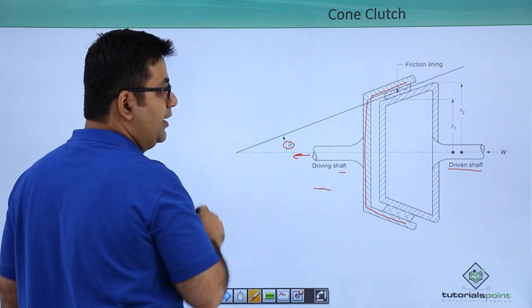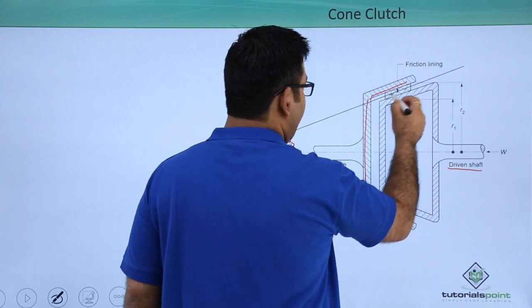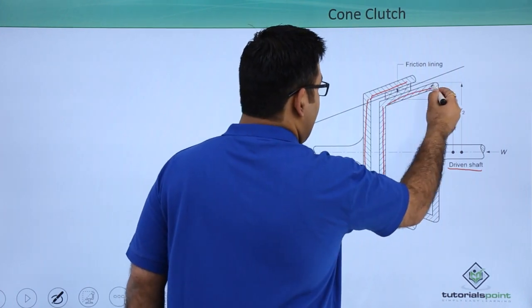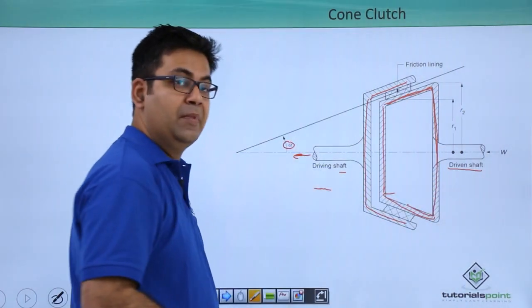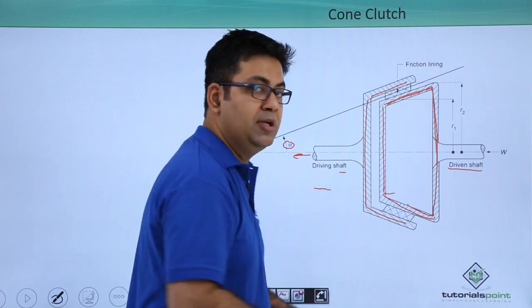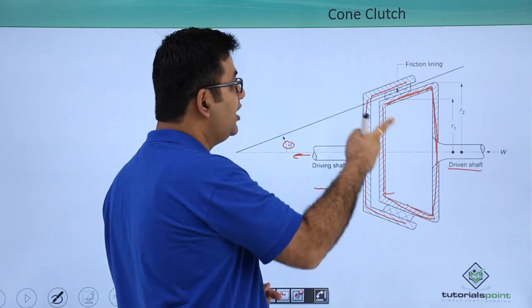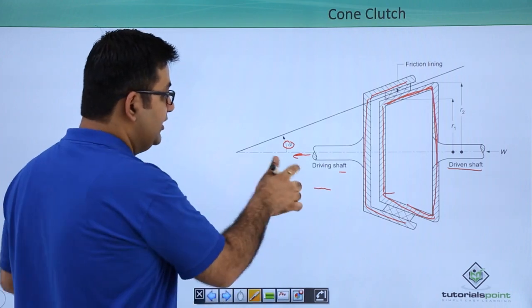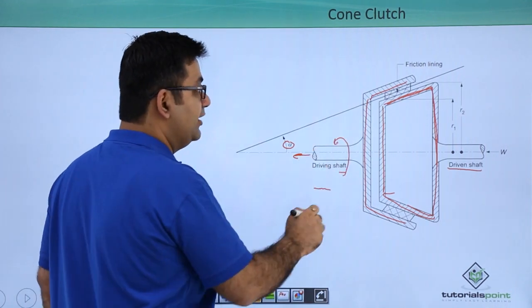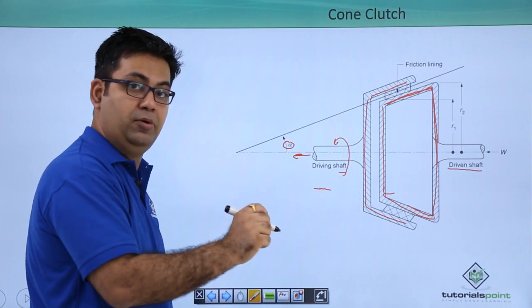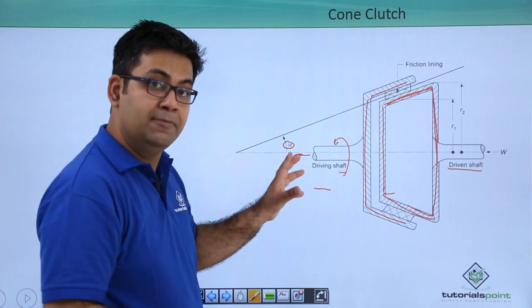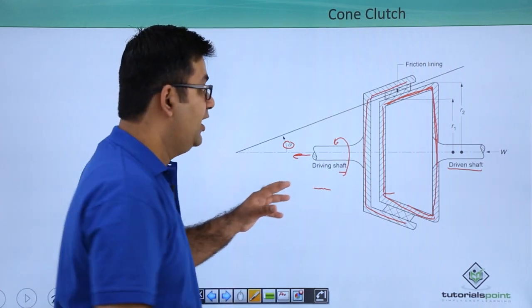Then you have the inner cone which is of the driven shaft. The outer cone and the inner cone mate each other, and this is how the drive is transmitted. This shaft has a drive and this cone has a drive, which is the outer cone.